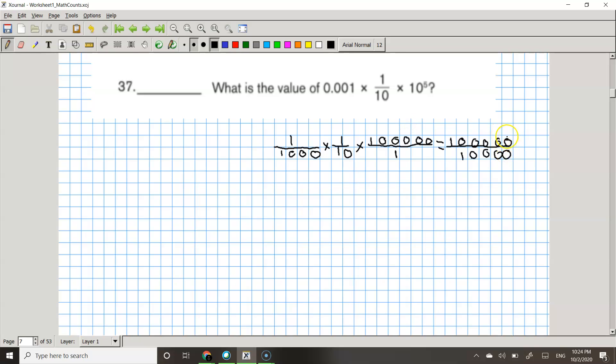So now to make it simpler even more, let's cross out the zeros. So the answer will be 10 over 1 or just 10.